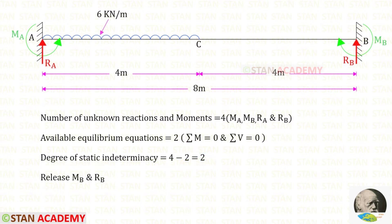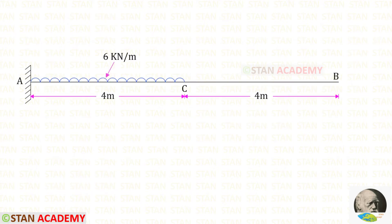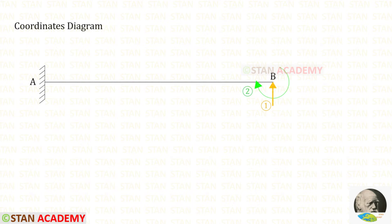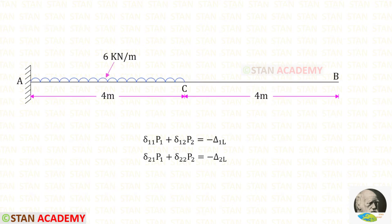To make this beam statically determinate, from these 4 unknowns we have to remove any two. Let us remove MB and RB. You can see that from point B, I have removed MB and RB, so point B becomes a free end. Previously this beam was a fixed beam but now it is a cantilever beam.